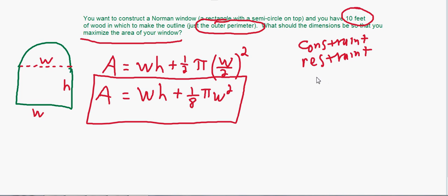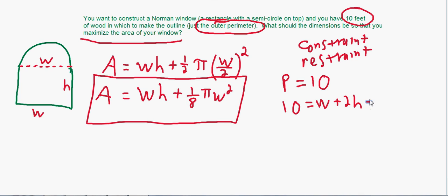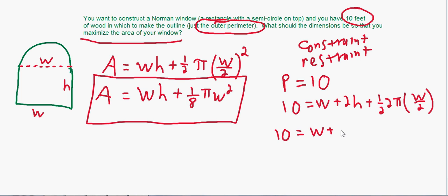We need an equation for this constraint. The perimeter equals 10, and the perimeter is also equal to w + h + h for the rectangle sides, plus the arc of the semicircle on top. The arc is half the circumference of a full circle: (1/2)(2π)(w/2) = πw/2. So our constraint is: 10 = w + 2h + (π/2)w.